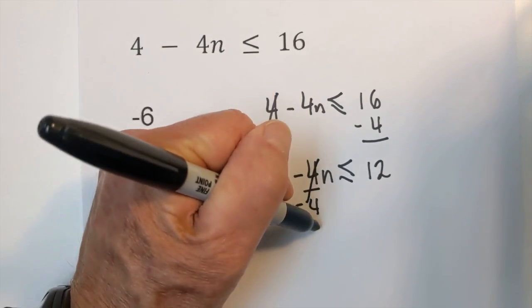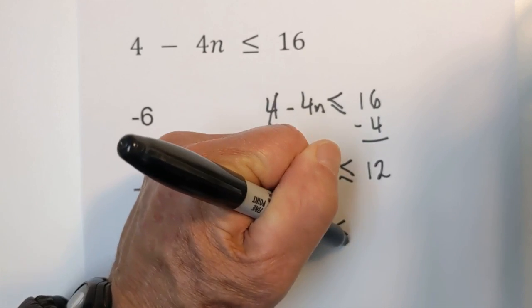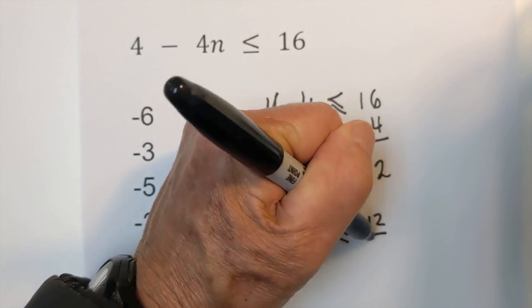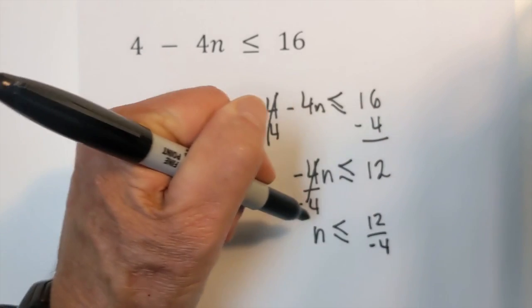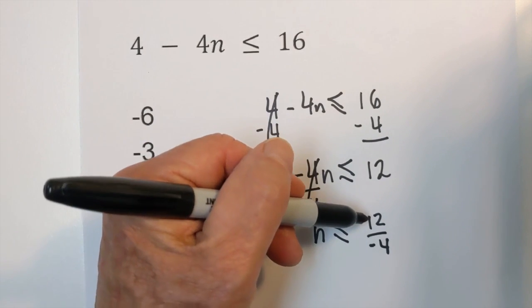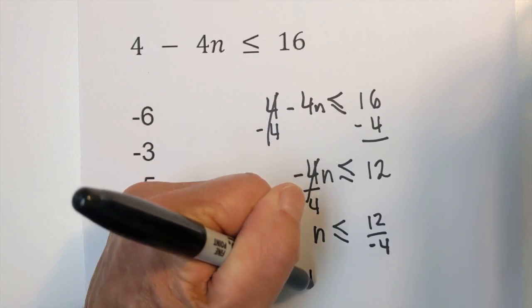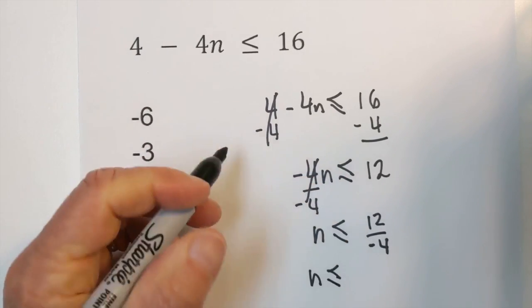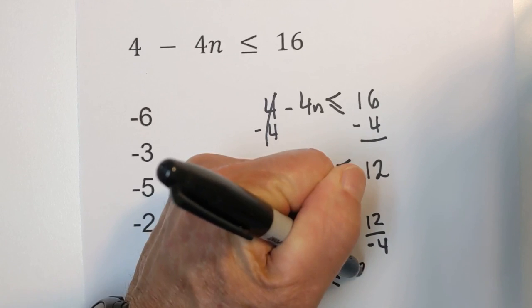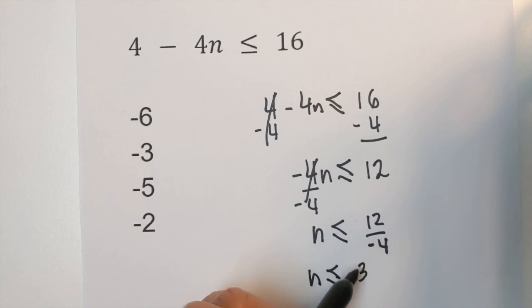These cancel, that becomes n, and we have 12 divided by a negative 4. And whenever you divide by a positive and negative it becomes negative and it will be n is less than or equal to negative 3 because 4 times 3 is 12.